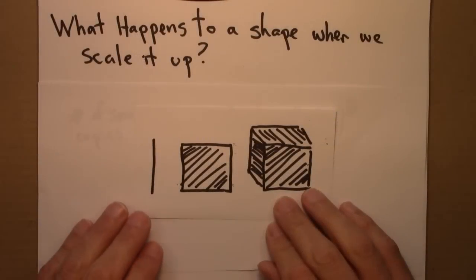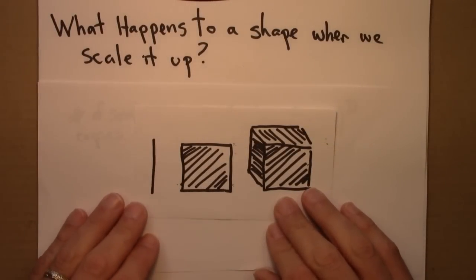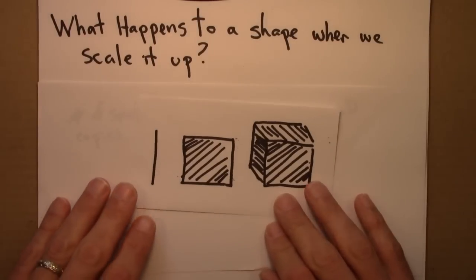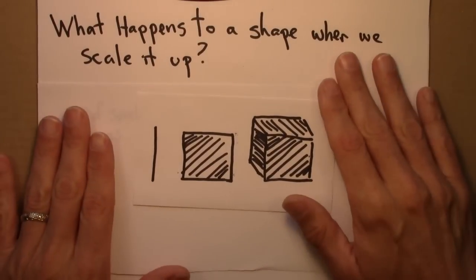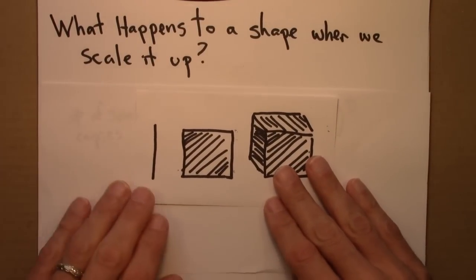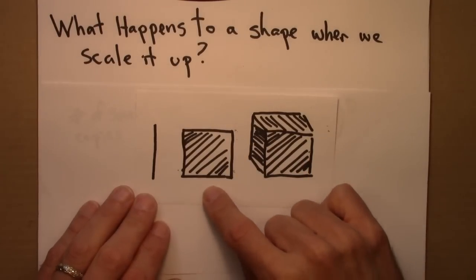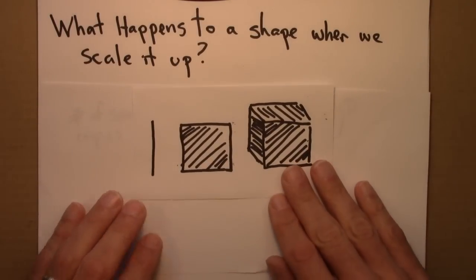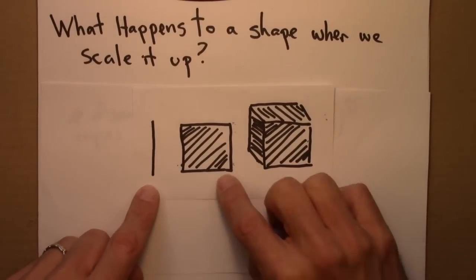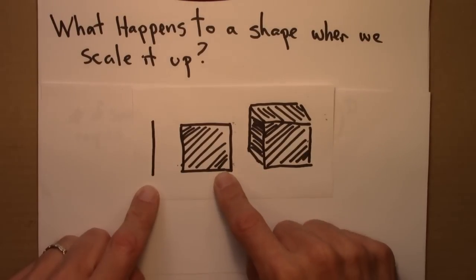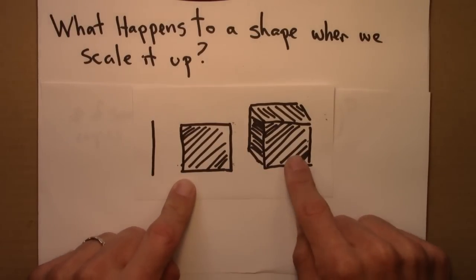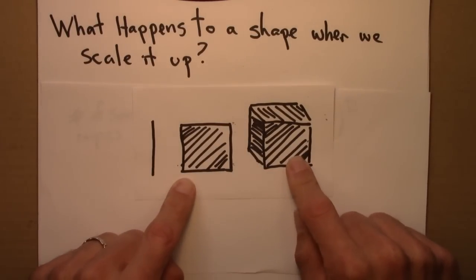I'll start by looking at some simple geometric objects with integer dimension. So let's think about what happens to shapes if we scale them up. I'll explain what I mean by that in just a sec. So here are three shapes that I drew, not very well, but I made it myself. So here's a line that's one-dimensional. Here's a square that's two-dimensional. And here's a cube that's three-dimensional.